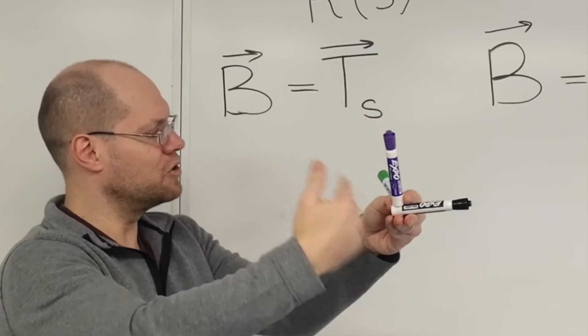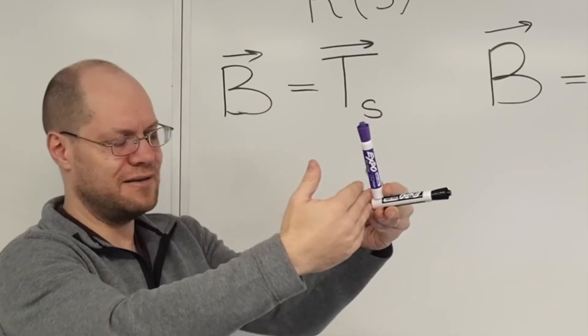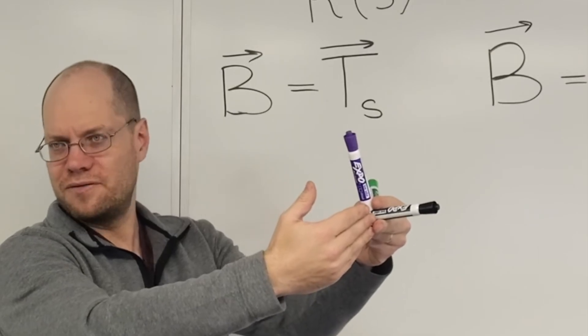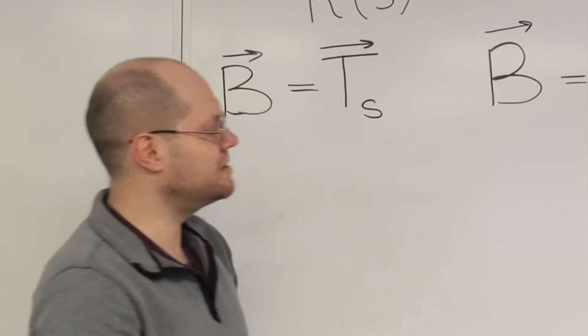So that's why the word normal figures in the name, and it's called the binormal, which is the second normal. Does that make sense? So that's Q.